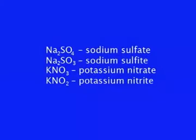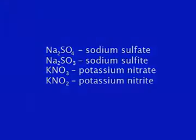In handling solid chemicals, the first step is to carefully read the label. Many chemicals have names and formulas that are very similar. For example, Na2SO4 is sodium sulfate, Na2SO3 is sodium sulfite, KNO3 is potassium nitrate, and KNO2 is potassium nitrite. Despite the similar formulas and names, these chemicals have quite different properties. Erroneous data and potential safety problems could result from using the wrong chemical.